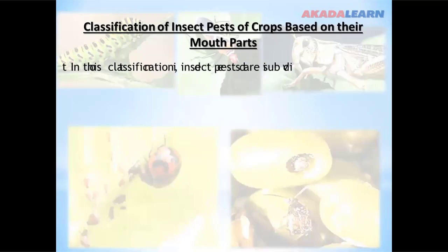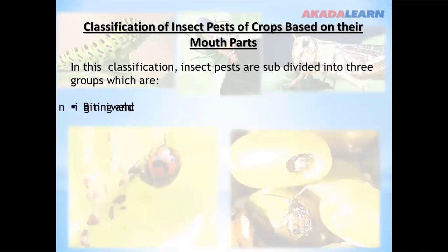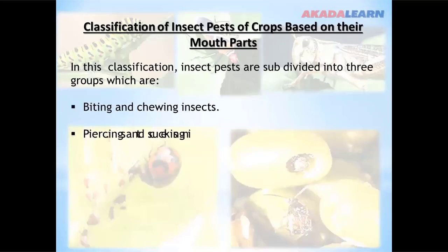In this classification, insect pests are subdivided into three groups: biting and chewing insects, piercing and sucking insects, and boring and chewing insects.